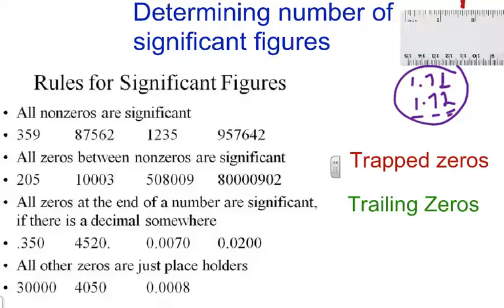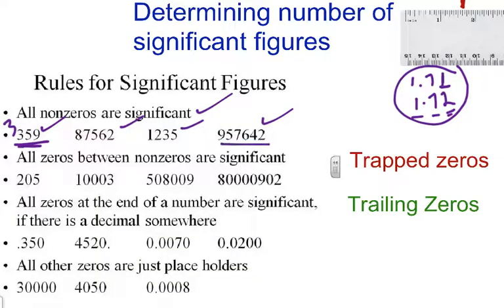The first and most easy of the rules is that all non-zero numbers are significant. So any of these numbers right here — all of the numbers are significant. So this number 359 has three significant numbers in it, and this number 957,642 has six significant numbers.